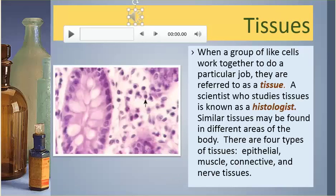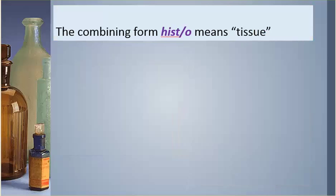When a group of like cells work together to do a particular job, they are referred to as a tissue. A scientist who studies tissues is known as a histologist. Similar tissues may be found in different areas of the body. There are four types of tissues: epithelial, muscle, connective, and nerve tissues. The combining form histo means tissue.